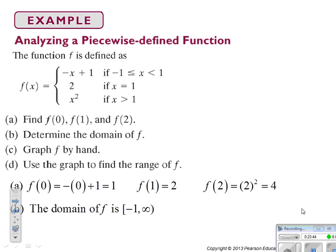The domain of f: the smallest x value is negative 1, included with a bracket. Because the last piece covers x greater than 1 going to infinity, we use an open parenthesis for infinity. So the domain is [-1, ∞).